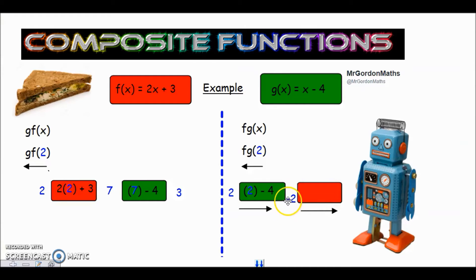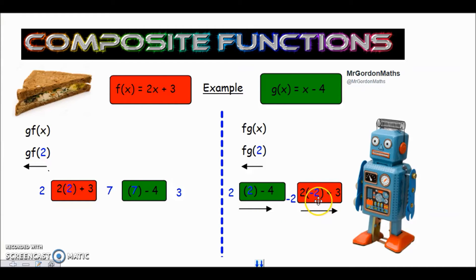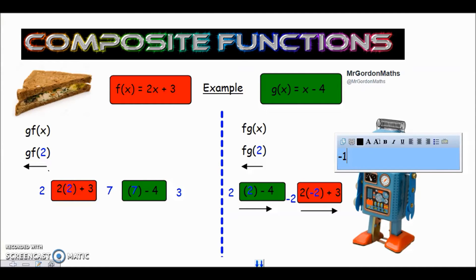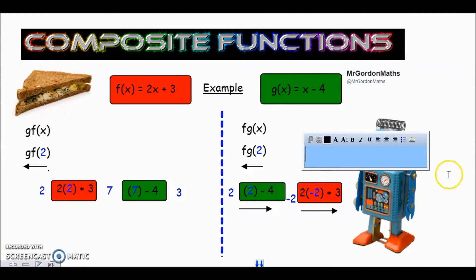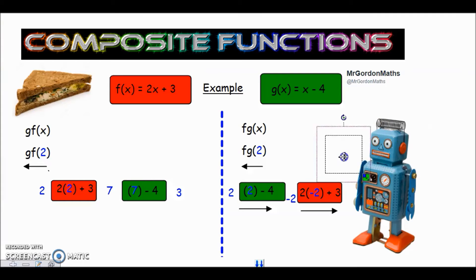That minus 2 is the value we put into the f of x function. So it's 2 times minus 2, which is minus 4, plus 3 giving us minus 1. So minus 1 is our output and that would be the answer. The second part of this video is going to be about when we're combining both functions together algebraically.